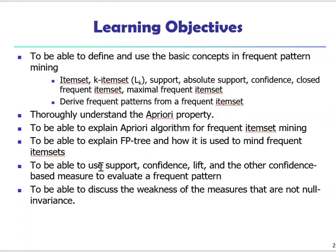Lastly, as mentioned earlier, we're going to discuss a large number of objective measurements to evaluate association rules. We're going to discuss different properties of them, especially the non-invariant property, which is important in certain applications.